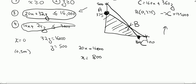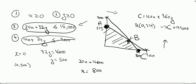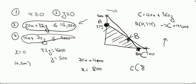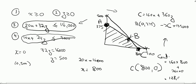However, points C and B have changed. At point C, we produce 800 units of x and 0 units of z, which gives a contribution of 160 × 800 plus 360 × 0. 160 into 800 is 128,000.